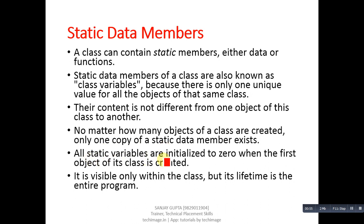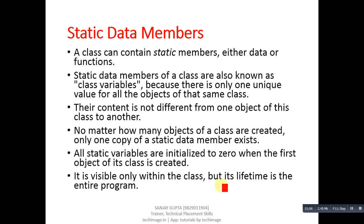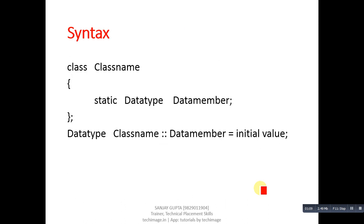All static variables are initialized to zero when the first object of its class is created. It is visible only within the class, meaning its scope is limited to the class, but its lifetime is the entire program.